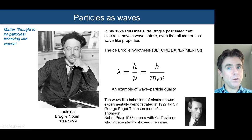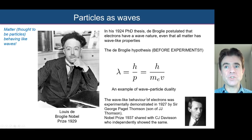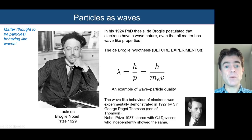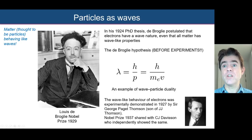Why did he receive the Nobel Prize? In 1927, a few years after de Broglie's hypothesis, this was experimentally shown to be the case by Sir George Padgett Thompson, who was in fact the son of J.J. Thompson — the person who discovered the electron. Experimentally, electron interference patterns were seen by George Padgett Thompson, for which he received a Nobel Prize in 1937, shared with C.J. Davison, who also independently and experimentally showed the same thing. So de Broglie's hypothesis was demonstrated experimentally in 1927, and Louis de Broglie got the Nobel Prize in 1929.